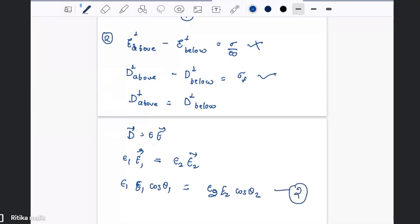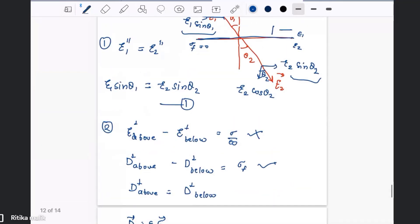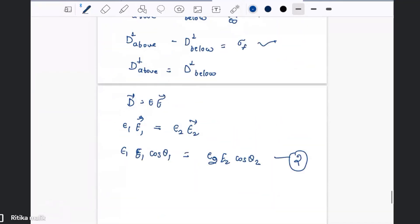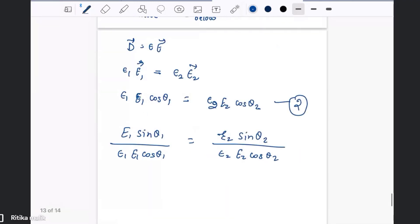We can divide the first equation and second equation and we are left with E1 sin theta 1 divided by epsilon 1 E1 cos theta 1 equals E2 sin theta 2 divided by epsilon 2 E2 cos theta 2. These terms will cancel out and we are left with tan theta 1 by epsilon 1 equals tan theta 2 by epsilon 2.